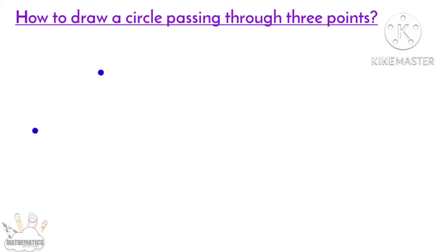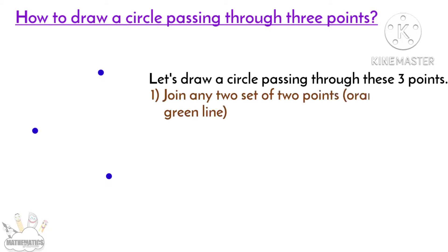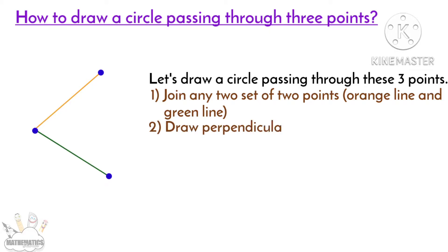How to draw a circle passing through three points. Let's draw a circle passing through these three points. Join any two sets of two points — here an orange line and a green line.